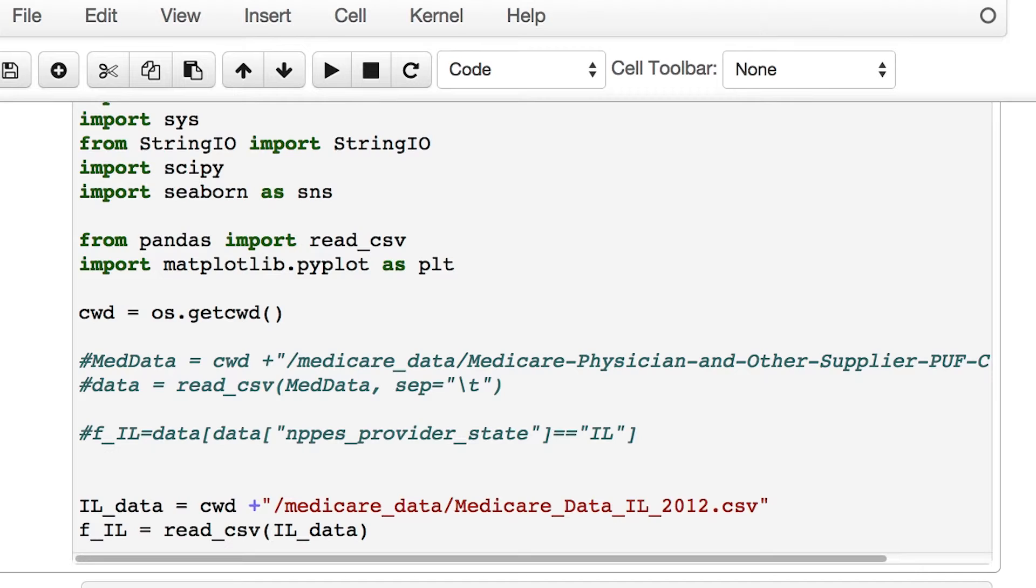If you scroll down further, you will see a file in the Medicare data folder that says medicare_data_illinois_2012.csv. This is a comma separated variable file. We created this file specially for you so that you don't have to use the entire data set. If you're interested in using the entire data set, use these commented out codes here to load the entire data set.